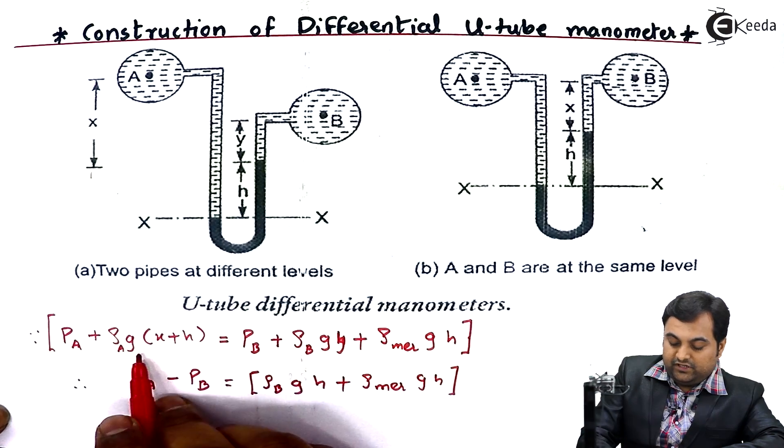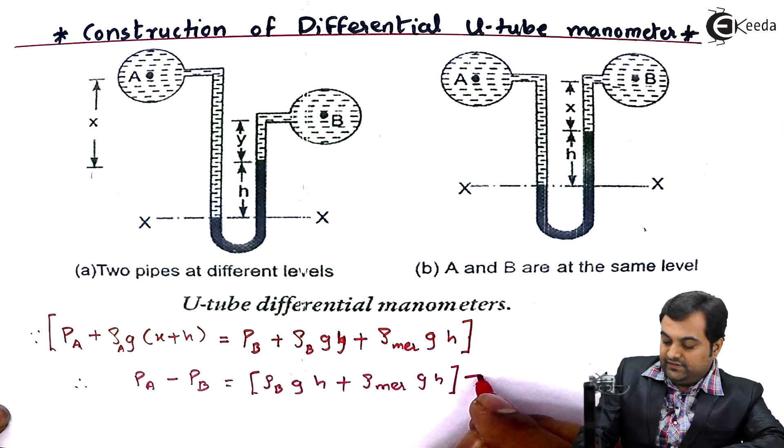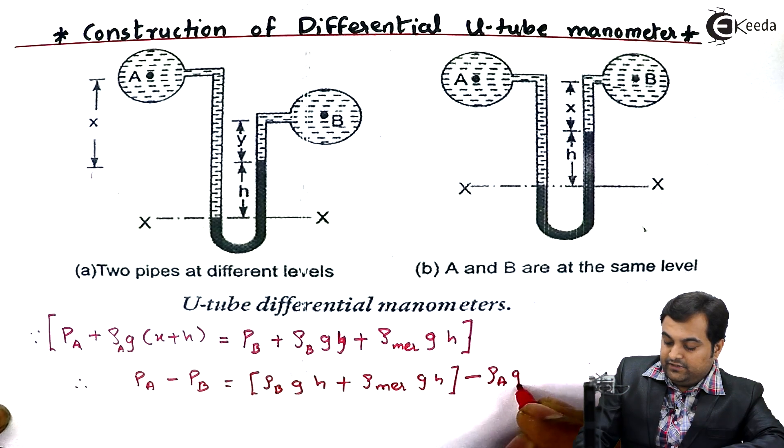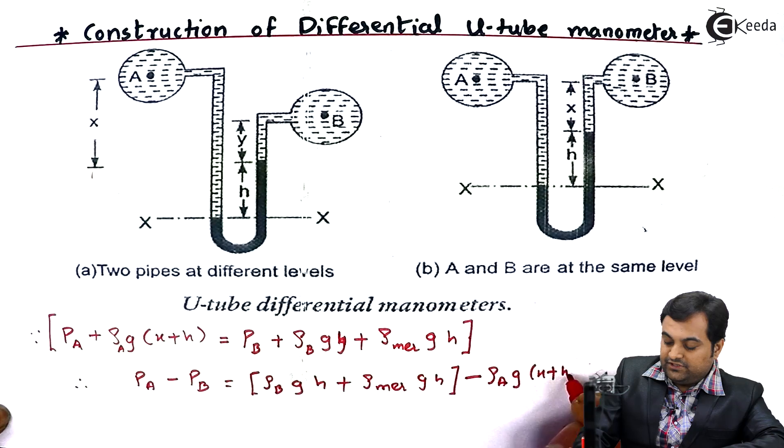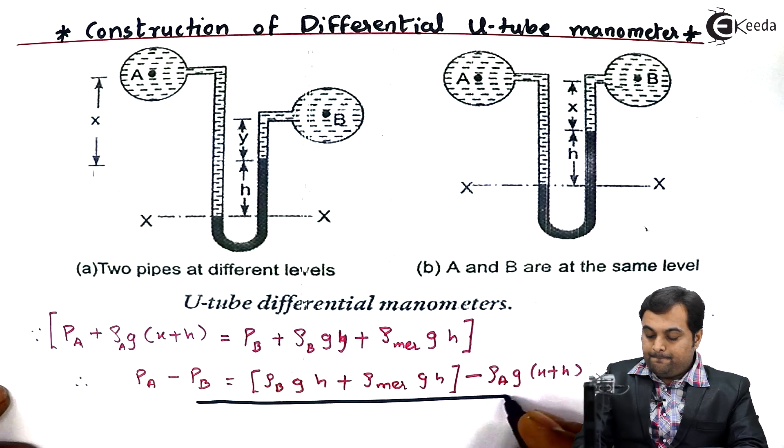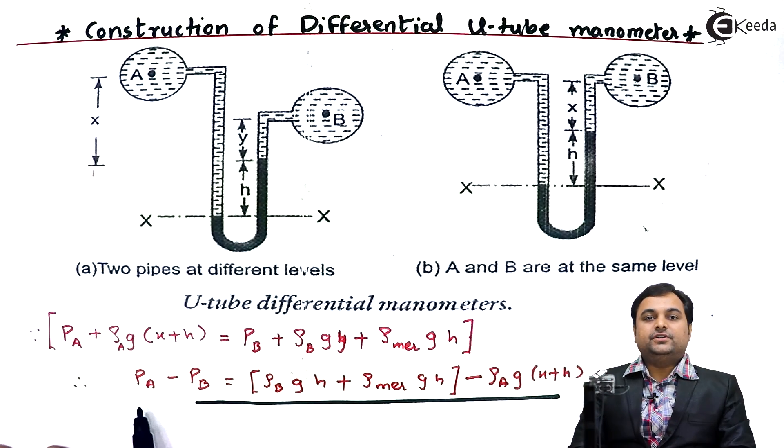So on the right side I have rho_B g H plus density of mercury g H. This term I'll send it onto the right hand side, so it becomes negative: minus rho_A g (X plus H). From this equation we can easily calculate the pressure difference from pipeline A and pipeline B.